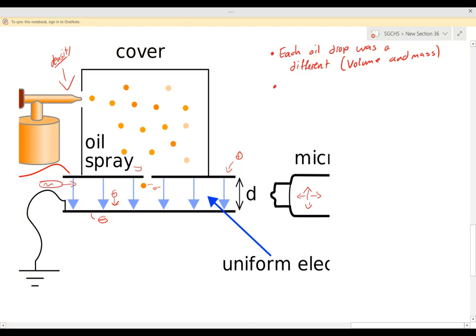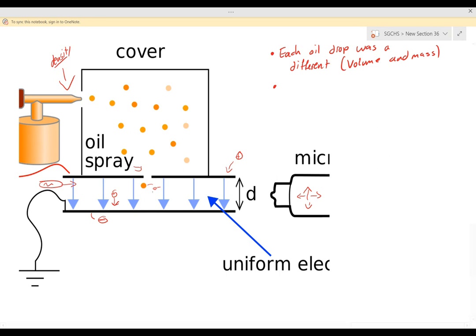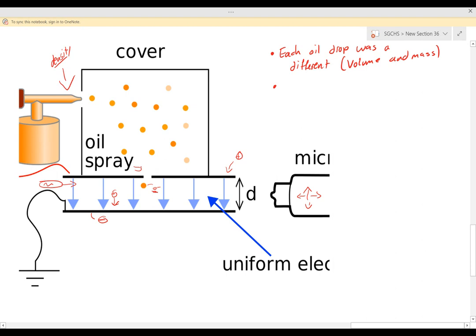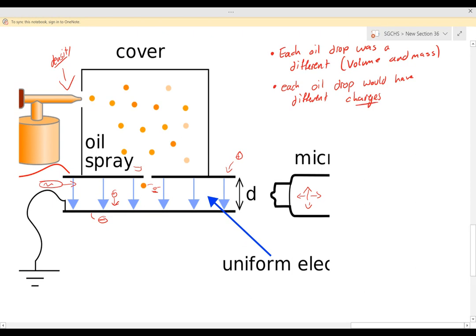Now something else to understand is since each oil drop was a different size, these electrons and the amount of electrons that would gather onto these oil drops would be different. At this point he didn't know they were electrons. They were just negative charges and he realized that these things were negatively charged. So each oil drop would have different charges. And how did he figure out the charge of the oil drop? That's what I want to focus on today.